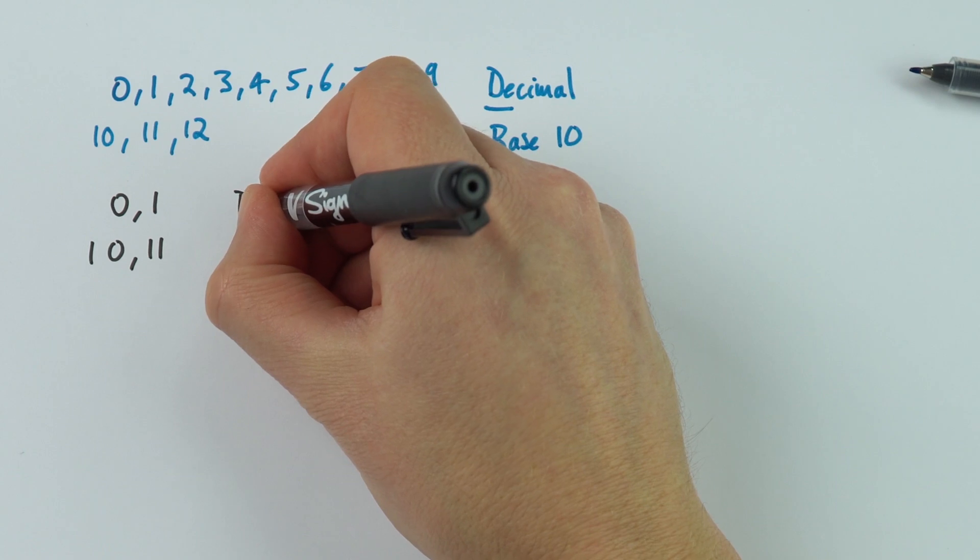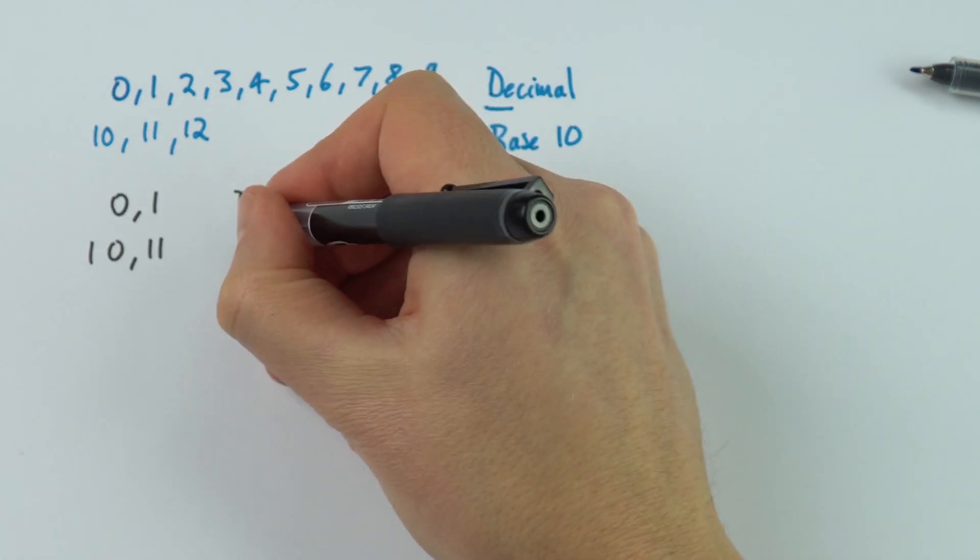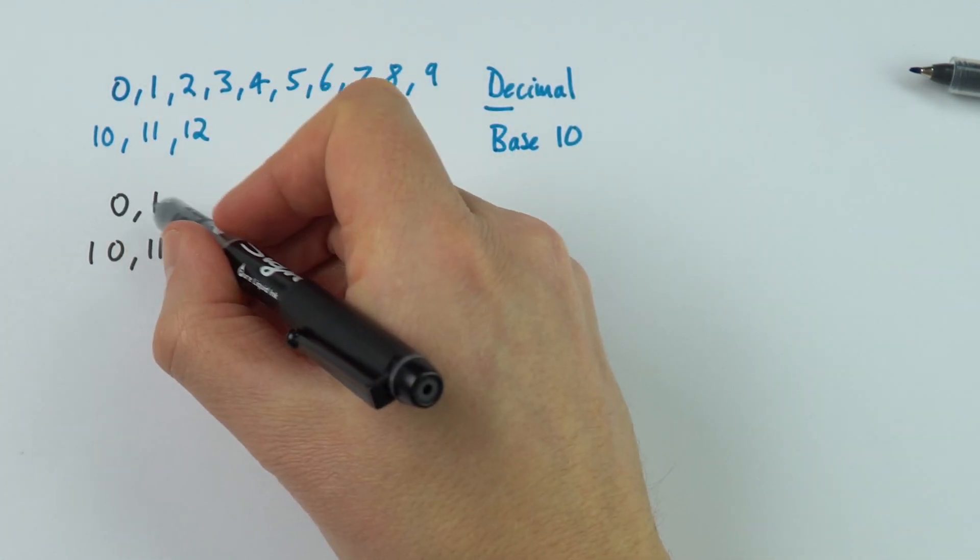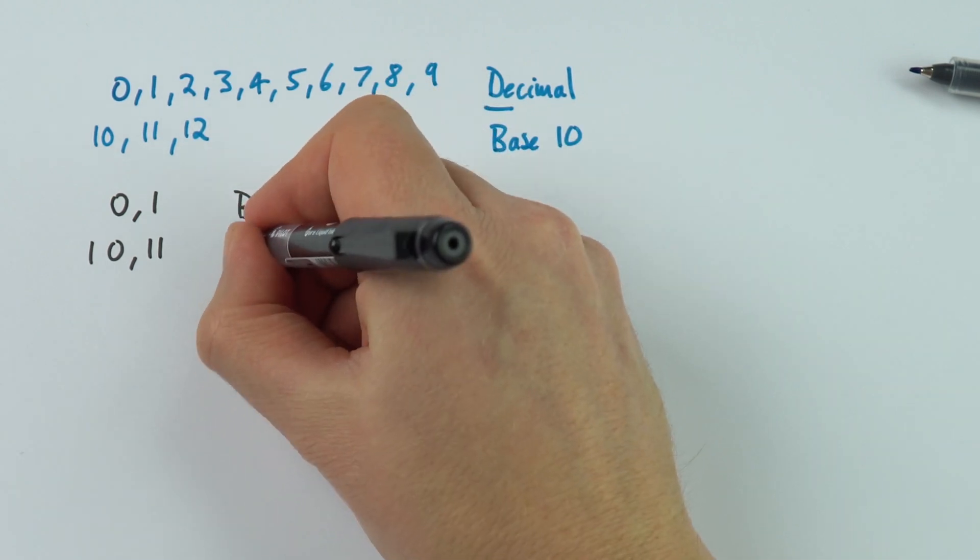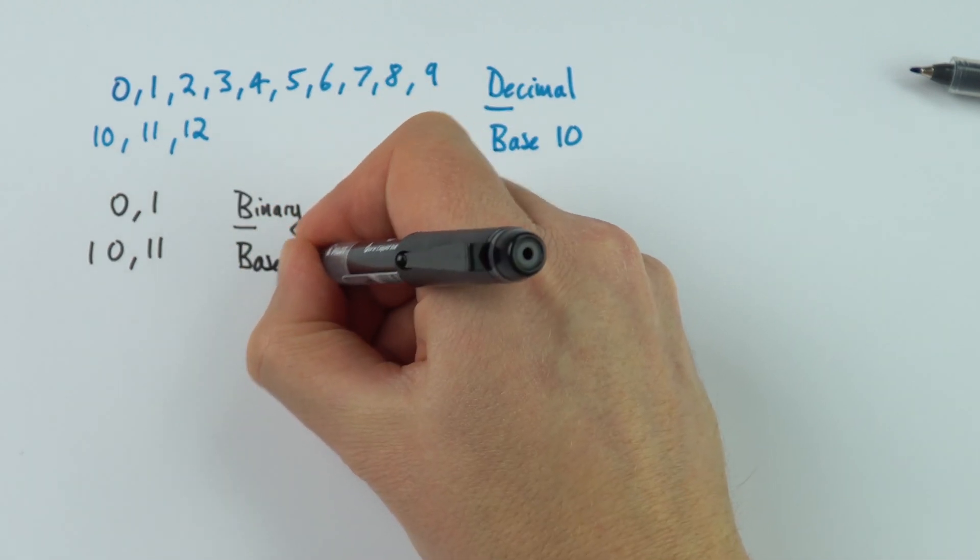Now, this is our binary system, and the word bi means that we've got two different values, and this is something which has base 2.